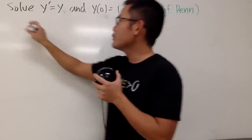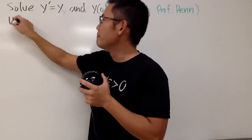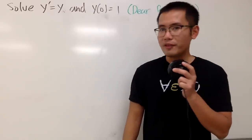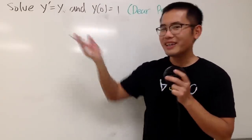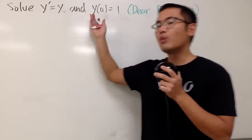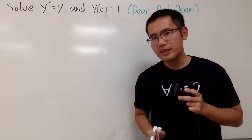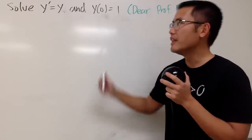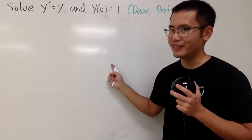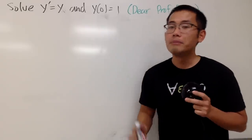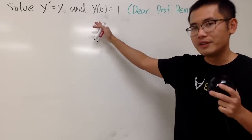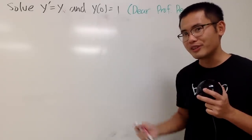We are going to solve y' = y, with initial condition y(0) = 1. Some of you might notice that the answer is just e to the x. But how many ways do we know to solve this differential equation with this initial condition?